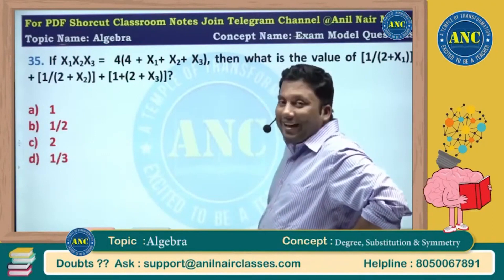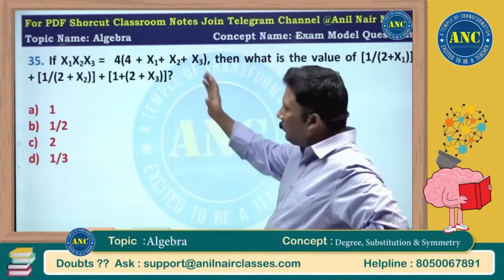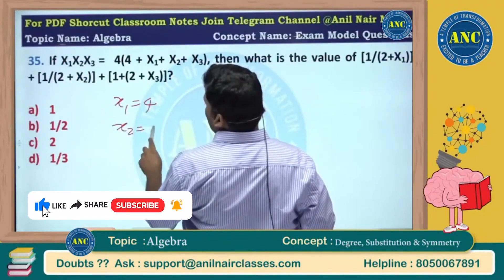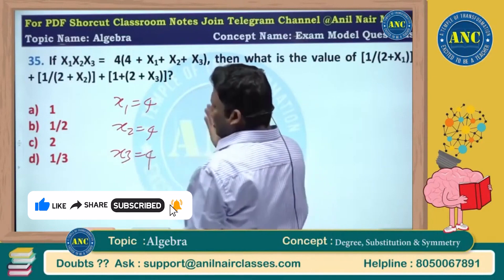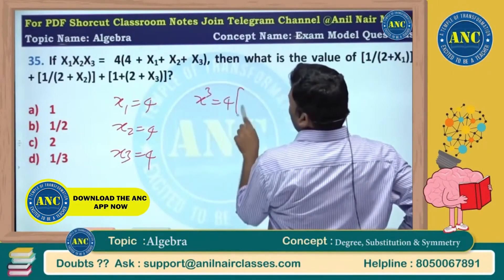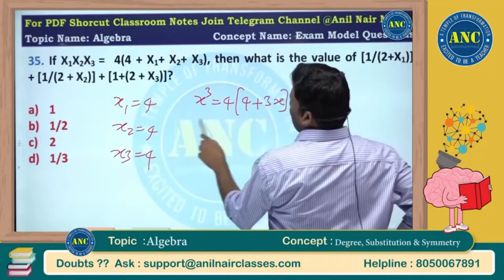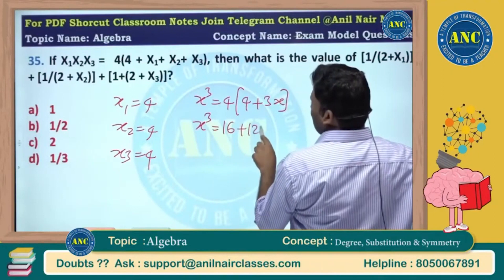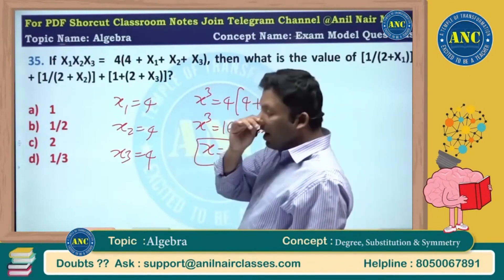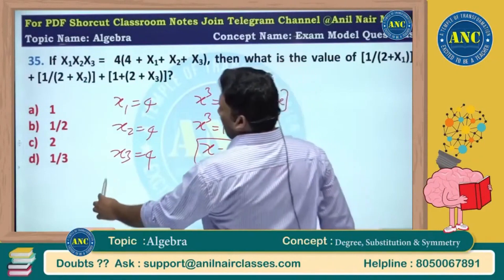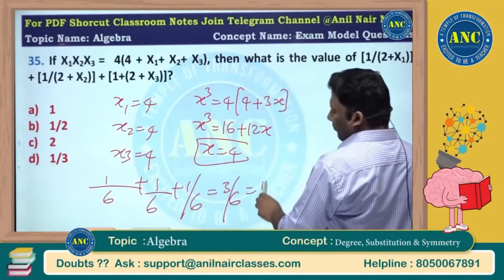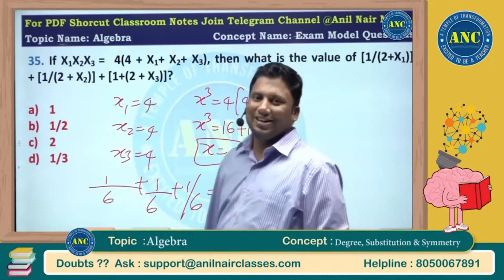For x1, x2, x3 equivalent to 4 into x1 plus x2 plus x3 — let us do it alternatively. This is x1, x2. If I put x1=4, x2=4, x3=4, am I getting the answer? Symmetric function — I will make all of them equal. If I make all of them equal, x cube equivalent to 4 into 4 plus 3x, so x cube equivalent to 16 plus 12x. x is 4 only: 4 cube is 64, and 48 plus 16 is 64. Make all of them 4. So this will be 1 by 2 plus 4, three times, giving 3 by 6. The answer for this question is 1 by 2.